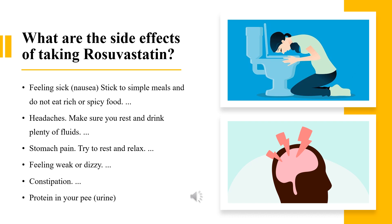What are the side effects of taking rosuvastatin? Common side effects may include: feeling sick or nausea — stick to simple meals and do not eat rich or spicy food; headaches — make sure you rest and drink plenty of fluids; stomach pain — try to rest and relax; feeling weak or dizzy; constipation; and protein in your urine. In rare cases, rosuvastatin can cause a condition that results in breakdown of skeletal muscle tissue, which may lead to kidney failure. Call your doctor right away if you have unexplained muscle pain, tenderness, or weakness, especially if you also have fever, unusual tiredness, or dark-colored urine.